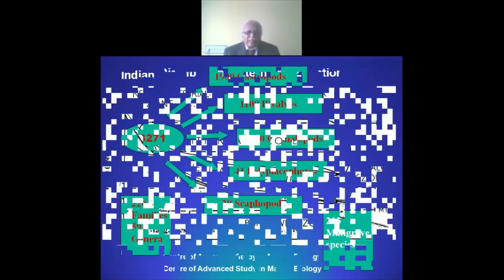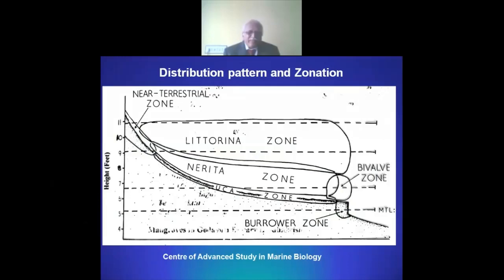Coming to molluscan biodiversity in the Indian context, there are 3,271 species of molluscs, out of which 215 species are considered mangrove species. Coming to the distribution pattern and zonation, the low tidal up to mid-tidal level is predominantly occupied by burrowers, namely the bivalves. This area is also shared by Uca, the crustacean crab, living in burrows, and we can see plenty of Uca burrows in this particular area.